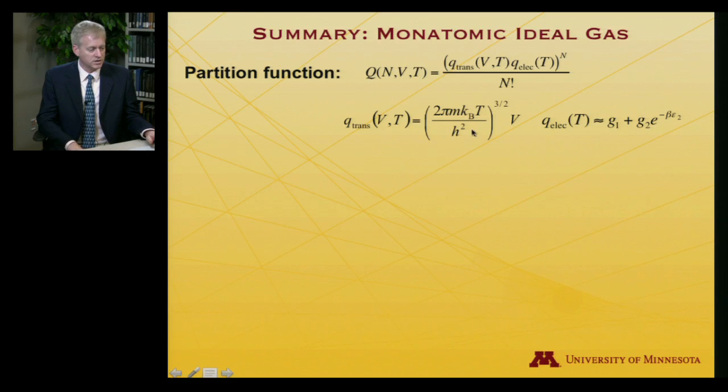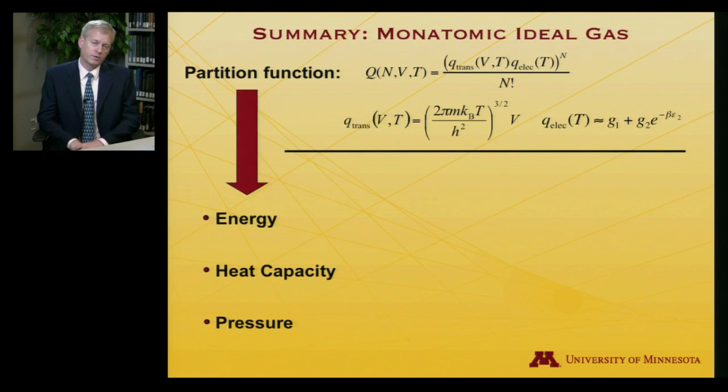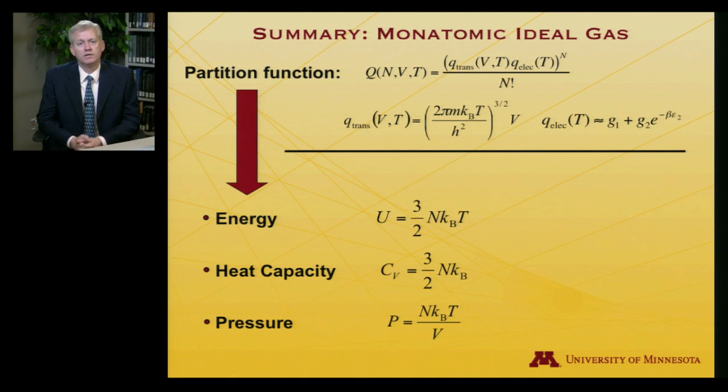Let's summarize what we have derived thus far. We've got an ensemble partition function for our monatomic ideal gas. The components of the atomic partition function are translational and electronic, as shown here. From that partition function, we can derive energy, heat capacity, and pressure. In particular, the energy to a good approximation, in those instances where we don't have excited electronic states contributing, is 3/2 NkT. The heat capacity is 3/2 Nk, and the pressure is NkT over V.